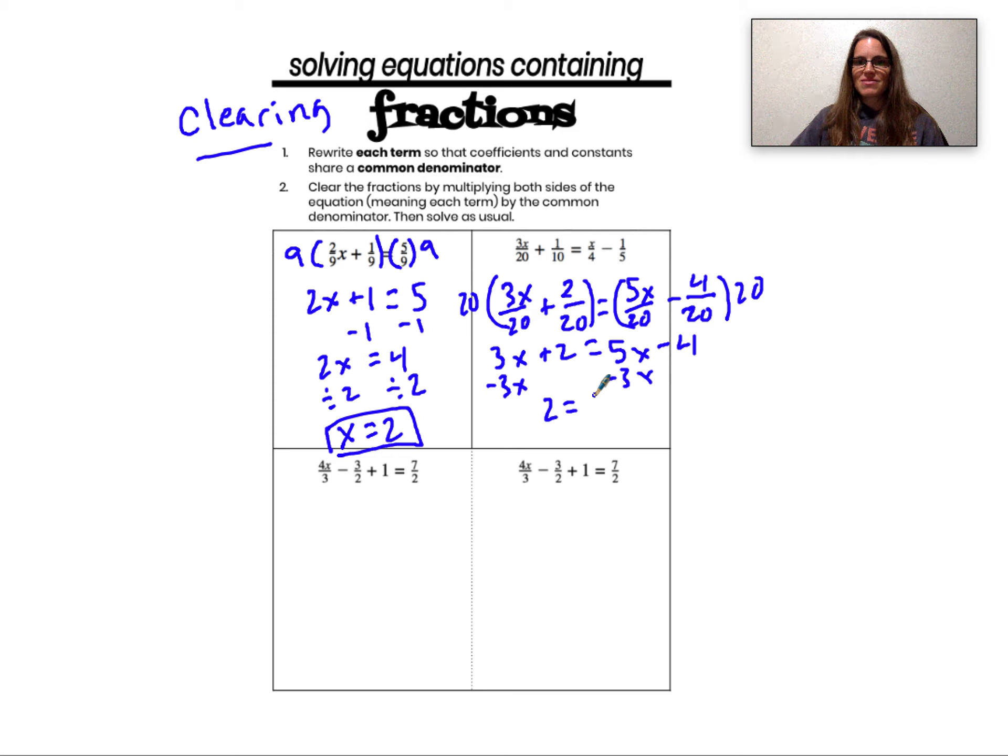Subtracting 3x from both sides, I have 2 equals 2x minus 4. Adding 4, I am running out of space. I have 6 equals 2x. And then my last inverse operation is to divide both sides of my equation by 2. So I end up with my solution x equals 3.